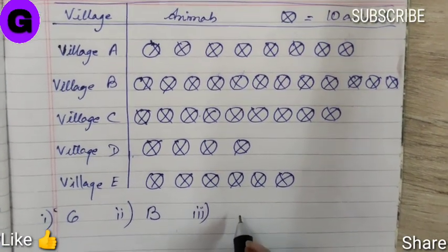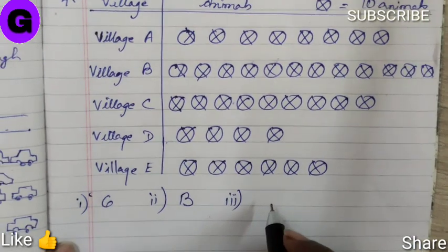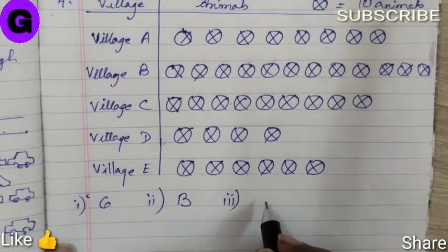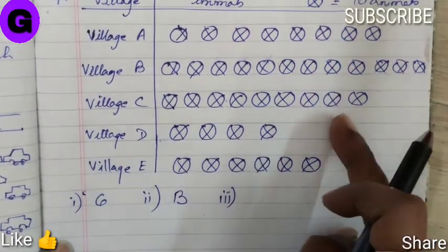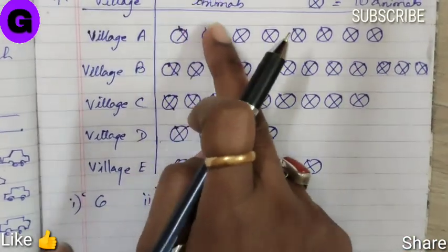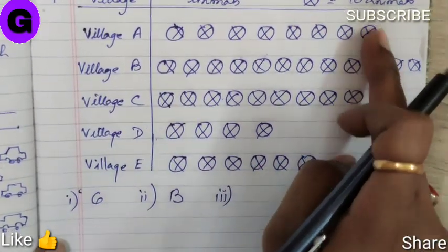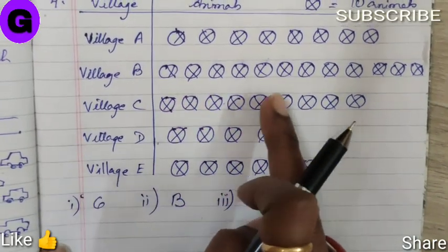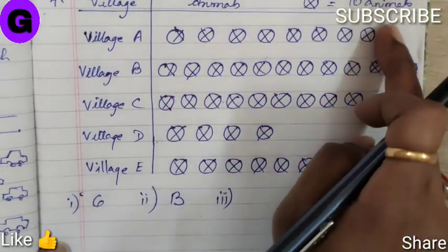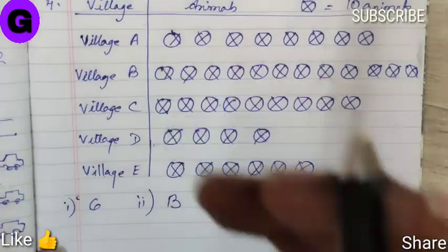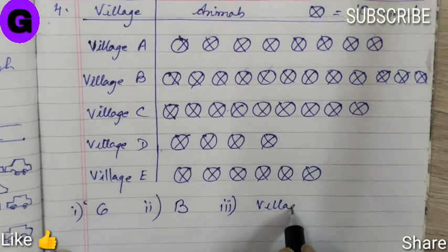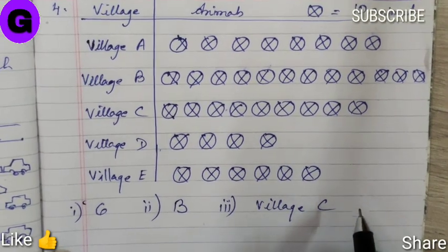Next question: Which village has more animals, Village A or Village C? Let's count. Village A has 8 symbols, that's 80 animals. Village C has 9 symbols, that's 90 animals. No doubt Village C has more animals compared to Village A. The answer is Village C.